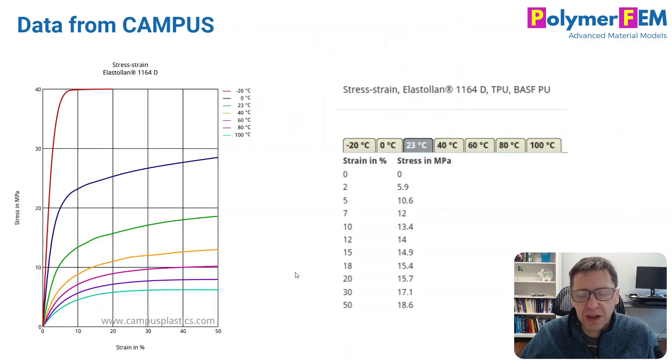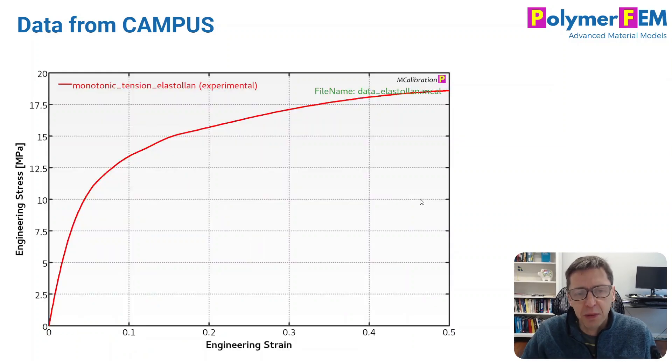And here's the stress-strain data from the previous image. The green one here is the room temperature. If you click on that, you'll get these control points that you can directly extract from the database. You can then put it into MCalibration and add additional data points within MCalibration very quickly. So here's the room temperature stress-strain curve that I will use for my example.